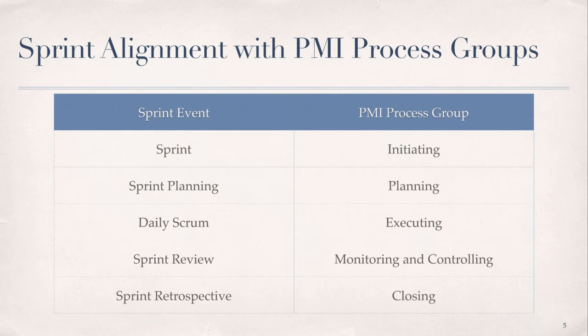It is instructive to note that each of the five PMI process groups are aligned with the sprint events, which occur during each iteration of the project life cycle.